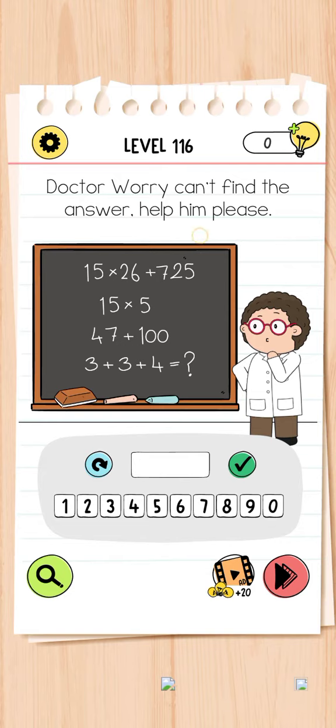So we have 15 multiply by 26 plus 725, 15 multiply by 5, equals 525. My math is weak, and 47 plus 100, and 3 plus 3 plus 4 is equal to... and the answer is 10.